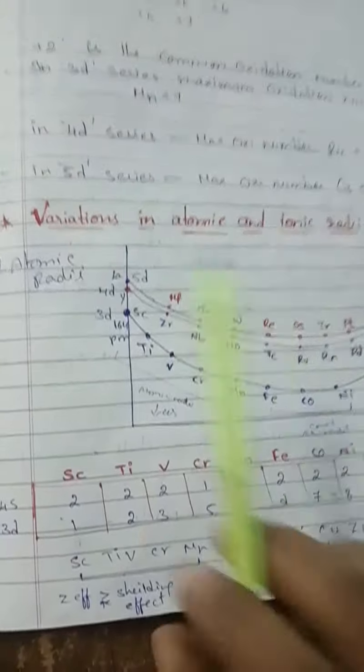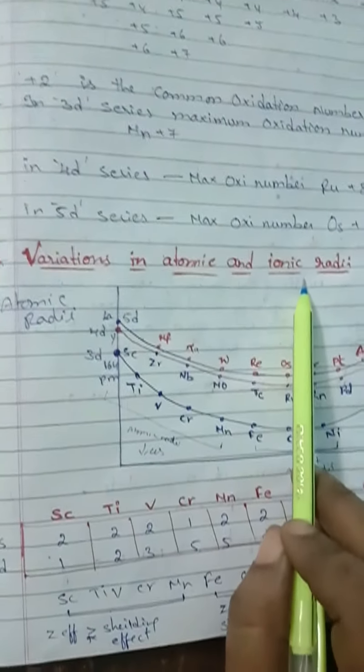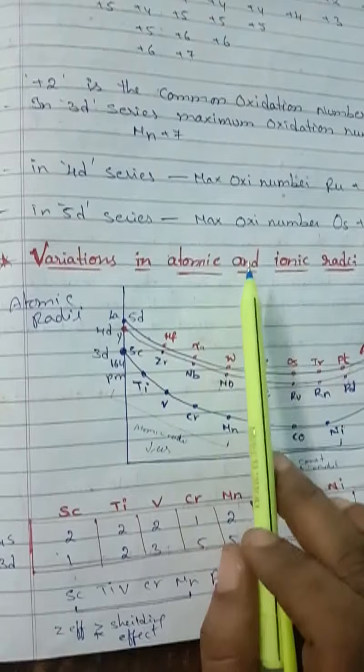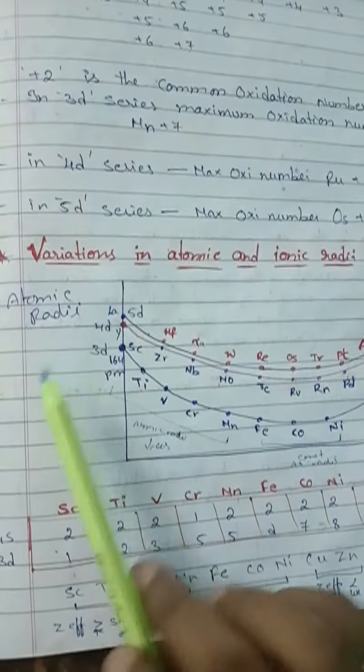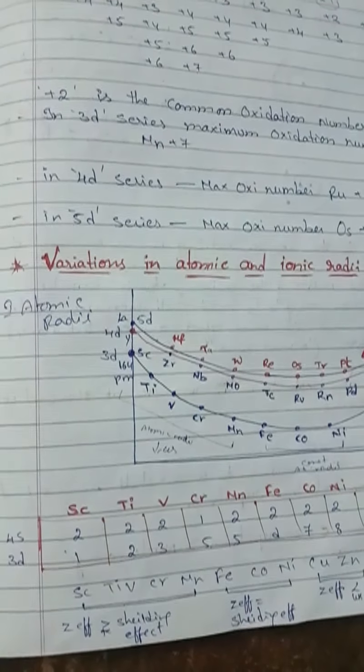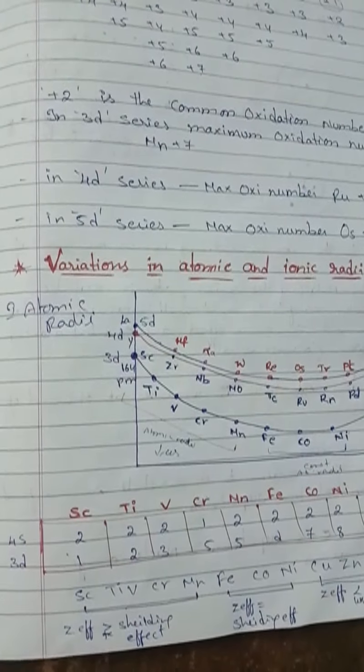Next, we come to variations in atomic and ionic radii. First, we are going to deal with atomic radii.